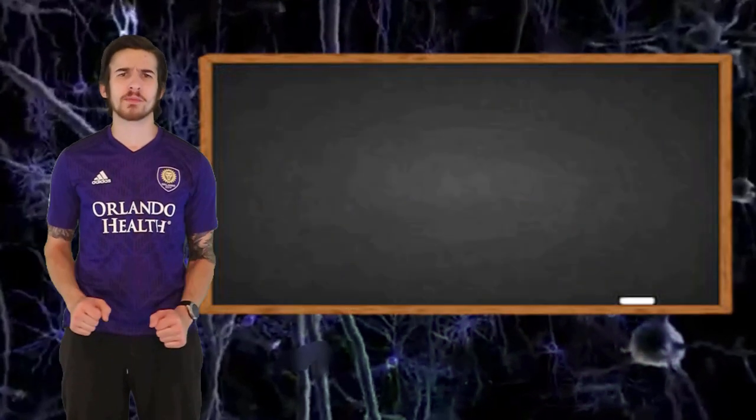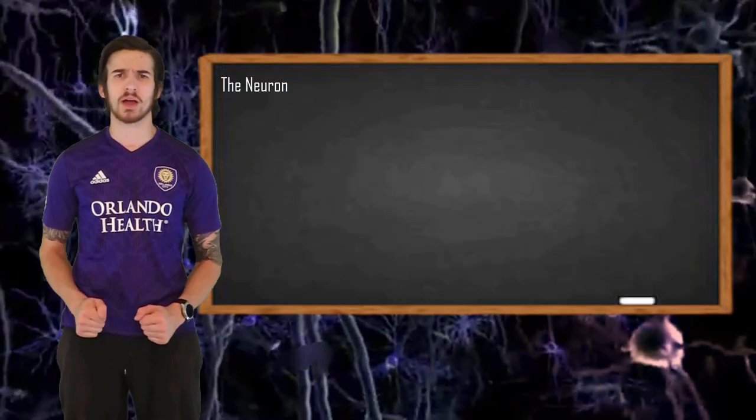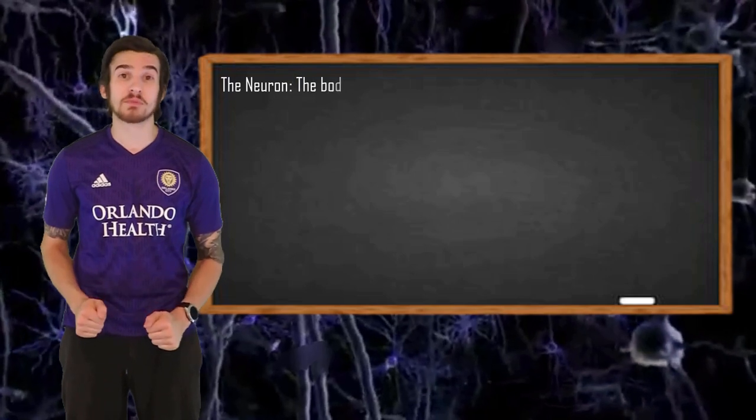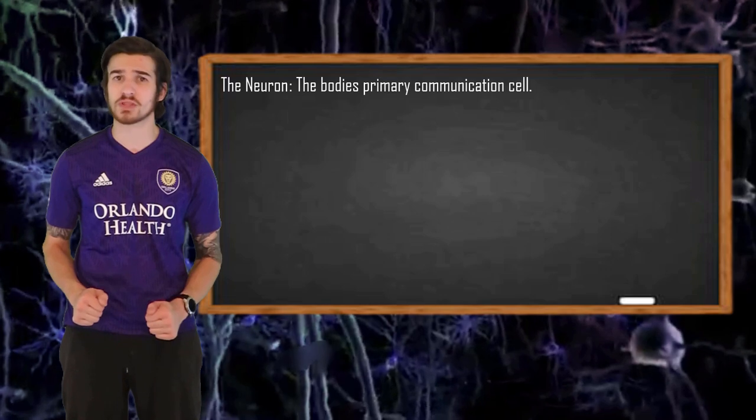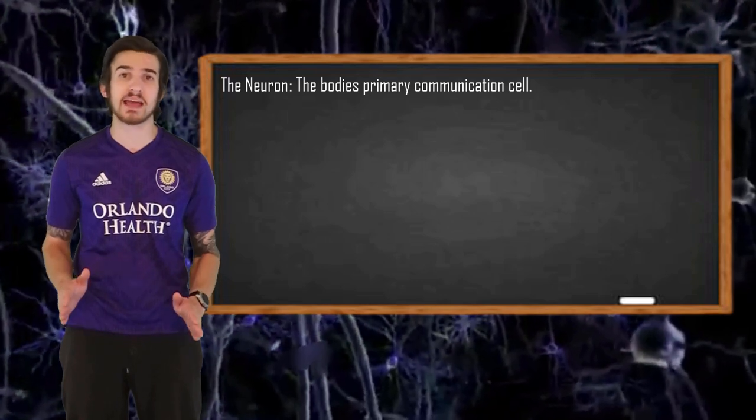Perfect. Now that we are in the human brain, let's start talking about the neuron. The neuron is going to be our body's primary communication cell. Brain tissue, no larger than a grain of salt, contains up to 10,000 neurons.